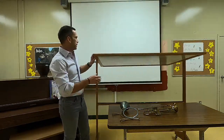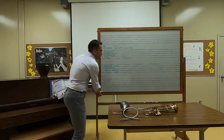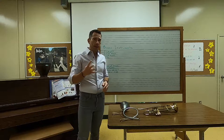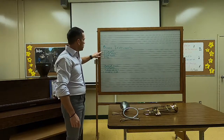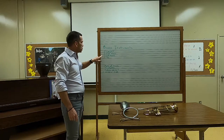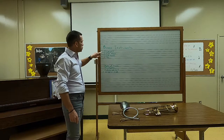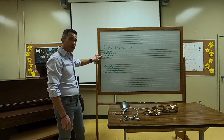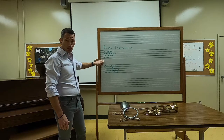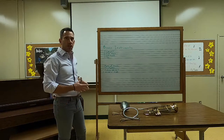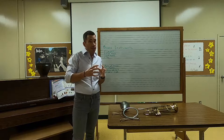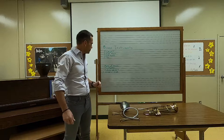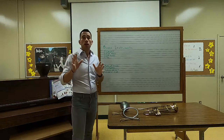Today we're going to focus on the brass family. There are many different brass instruments, but four basic ones are the trumpet, the French horn, trombone, and tuba. The trumpet's the smallest, the French horn is a little bigger, the trombone is bigger than that, and the biggest one is the tuba, so it's going to be the lowest. Usually when instruments are smaller they're higher pitched, and when they get bigger they get lower pitched.